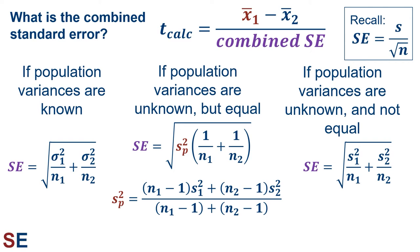The second scenario is when our population variances are unknown, but we can assume them to be equal. In this situation, the standard error is the square root of the pooled variance multiplied by 1 over the sample size of sample 1 plus 1 over the sample size of sample 2. The pooled variance is the weighted average of the sample variances, where the weighting is done by the degrees of freedom for each sample. This is a more realistic situation because while we never usually know the variances of the populations, it may well be the case that the population variances are similar and we can assume they're equal. The third scenario is when the population variances are unknown and we do not assume that they are equal. In this case, the standard error is the square root of the variance of sample 1 divided by its sample size, plus the variance of sample 2 divided by its sample size. This is the situation in which we make the fewest assumptions about our populations, so of these three, this is the most likely scenario.